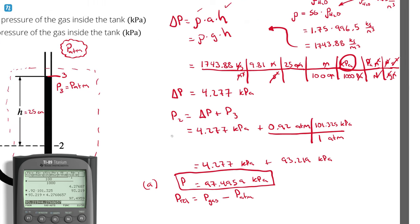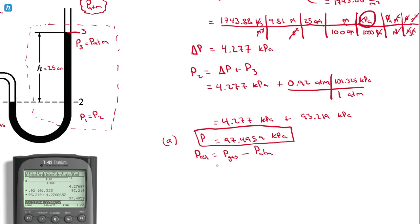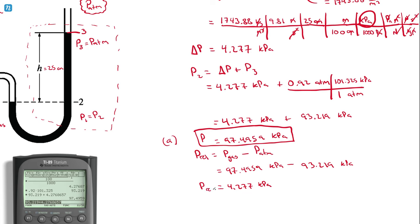To answer part B, I convert from absolute pressure to relative pressure using: P_relative equals P_gas minus P_atm. That's 97.496 kPa minus 93.219 kPa, which gives 4.277 kPa. This makes sense because I built 97.5 by adding 4.277 and 93.219, so subtracting 93.219 recovers 4.277. Therefore, the relative pressure — the answer to part B — is 4.277 kilopascals. And that's problem number two solved.